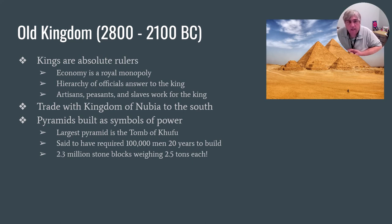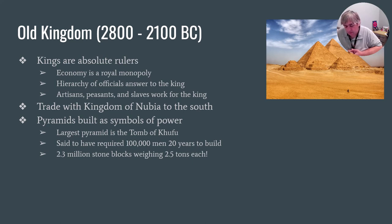The Old Kingdom is also going to trade with some neighbors — the kingdom of Nubia and the people of the Mesopotamian areas — and all of this is going to be done under the name of the king. Now, if you want a really good idea of how powerful these kings were, all you have to do is look at the pyramids.